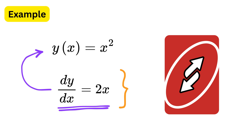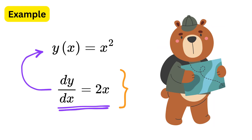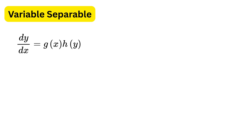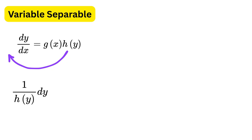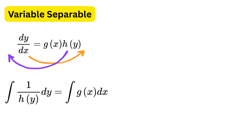There are different ways to solve these equations and we will explore a few of those methods step by step. The first is the variable separable method — this is the easiest method and the one you should try first whenever you can. The trick is to rearrange the equation so that everything involving y sits on one side and everything involving x sits on the other side. Once you do that, you integrate both sides.